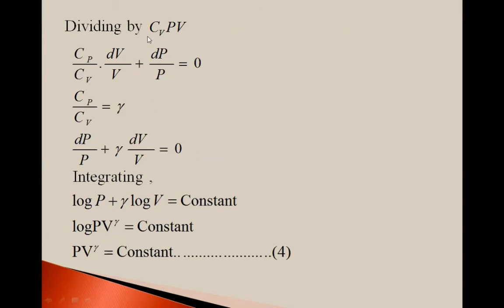Dividing by cv × P × V, we get: (cp / cv) × dV / V + dP / P = 0. Since cp / cv equals gamma, this becomes: dP / P + gamma × dV / V = 0. Integrating this equation gives: log P + gamma × log V = constant, so log(P V^gamma) = constant, therefore P V^gamma = constant — this is equation 4.